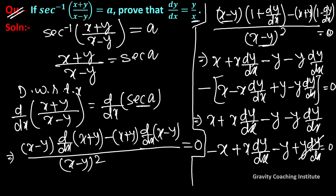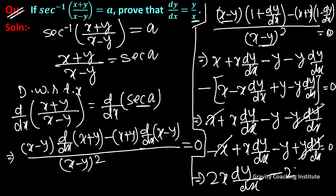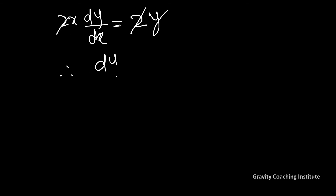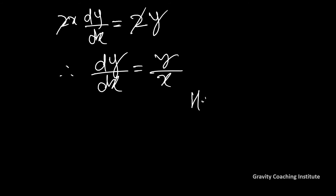Simplifying, the x terms cancel (x minus x equals 0) and collecting dy upon dx terms: 2x dy upon dx equals 2y, so dy upon dx equals y upon x. Hence proved.